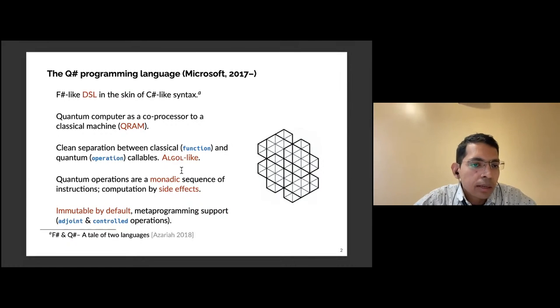QSharp clearly separates between classical functions and quantum operations in the syntax. All computation on the quantum machine is done by side effects, so effectively the quantum operations are a monadic sequence of instructions, and our work exposes that. Other nice features are that most things are immutable by default, and there are features for meta-programming such as automatically generating adjoint and controlled versions of operations.